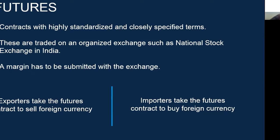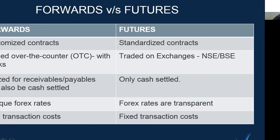Exporters take the futures contract to sell foreign currency to hedge their forex risk, while importers hedge their forex risk by taking the futures contract to buy the foreign currency. The difference between futures contracts and forward contracts are quite clear. The first and foremost difference is that forward contracts are customized contracts, while futures contracts are standardized contracts with specific terms. They have specified maturity as well as specified lot size, which is usually 1000 units.